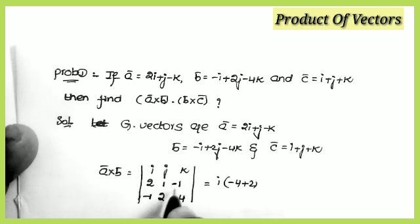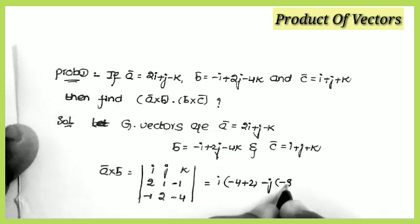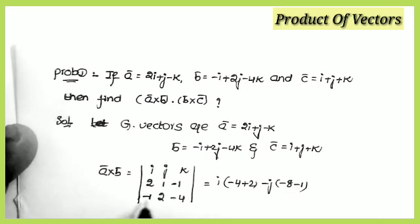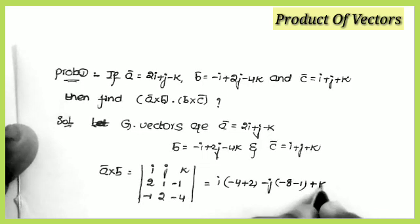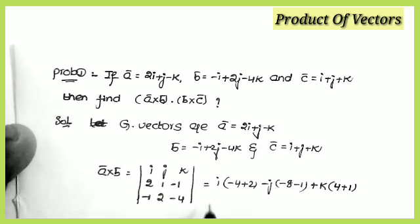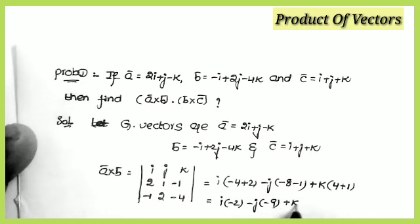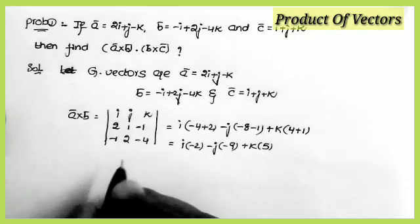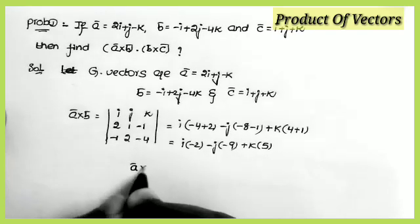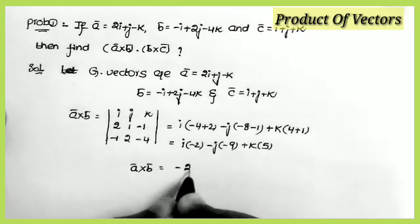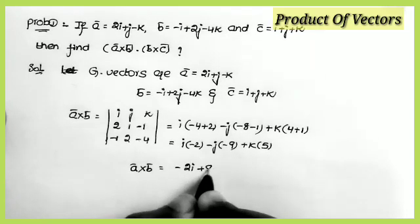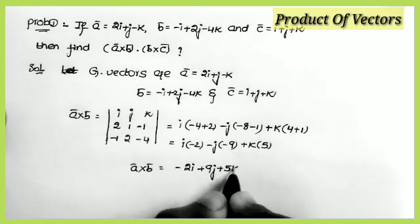Computing the determinant: i component is (1×−4 − 2×−1) = −4 + 2 = −2; j component is −(2×−4 − (−1)×−1) = −(−8 − 1) = 9; k component is (2×2 − 1×−1) = 4 + 1 = 5. Therefore a×b = −2i + 9j + 5k.